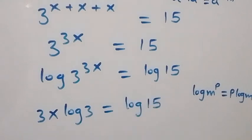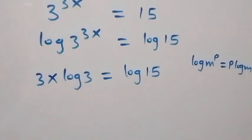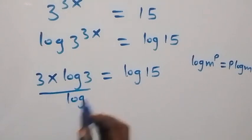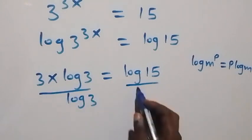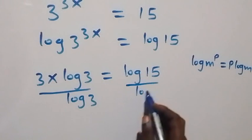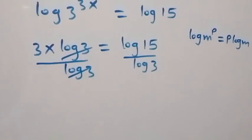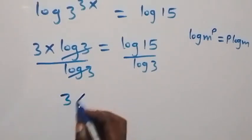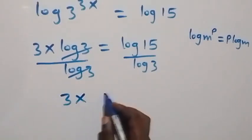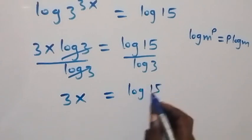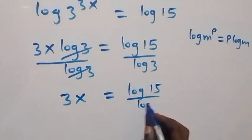From here, the next step is to divide both sides by log 3. Dividing this side by log 3 and also this side by log 3, log 3 cancels each other, and we are left with 3x equals log 15 over log 3.